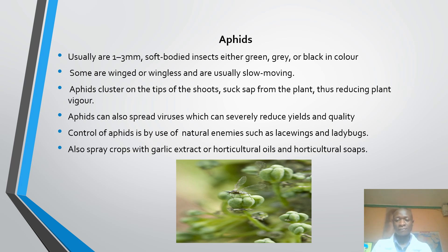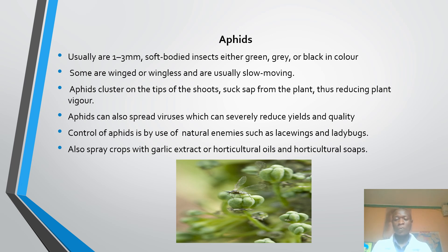How can we control these aphids? We can do this by a biological control method — by use of natural enemies to the aphids, known as lacewings and ladybirds. We can also use sprays containing pyrethrum and piperonyl butoxide, though crops should not be picked for one day after its use. We can also spray with garlic extract, horticultural oils and horticultural soaps.